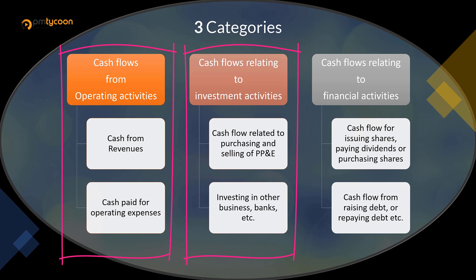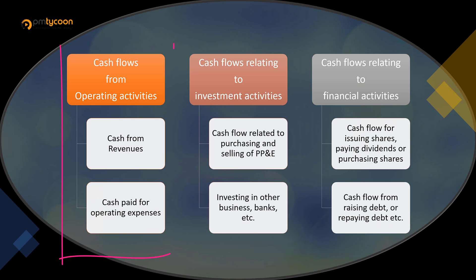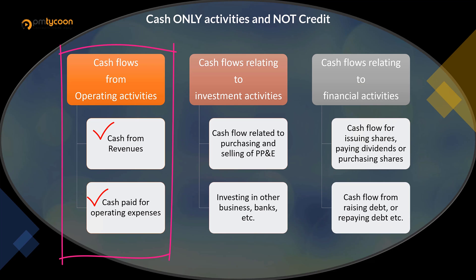Cash flow statements are broadly summarized into three categories: cash flow from operational activities, cash flow relating to investing activities, and cash flows relating to financing activities. Cash flow from operational activities includes only revenues and operating expenses for which the company actually received or paid cash. Sales done on a credit basis are not included, and similarly, purchases made on credit are not considered — only cash transactions are taken into account.